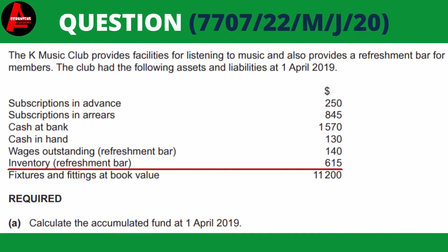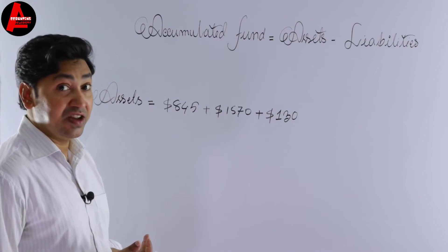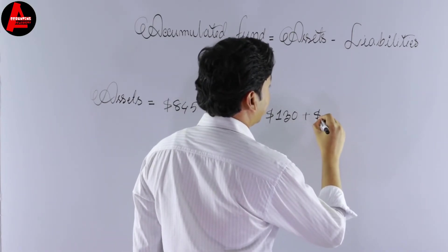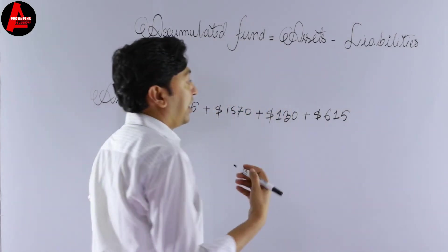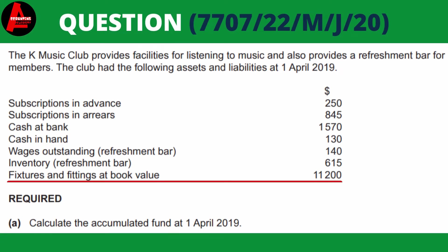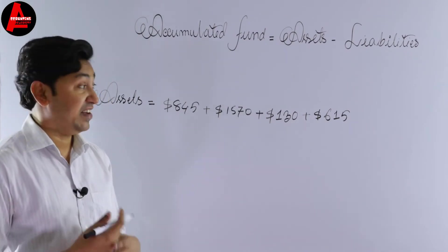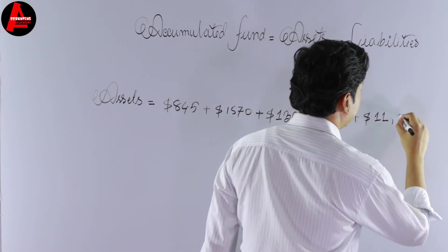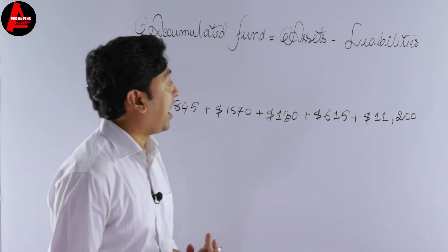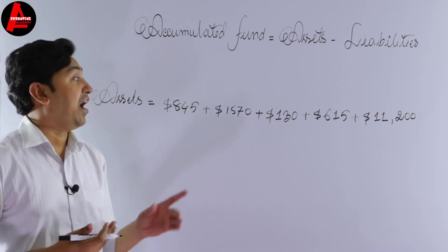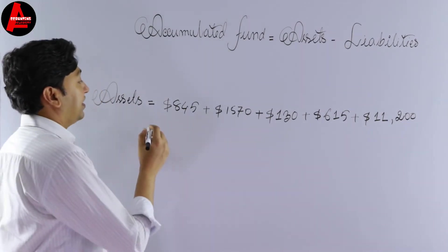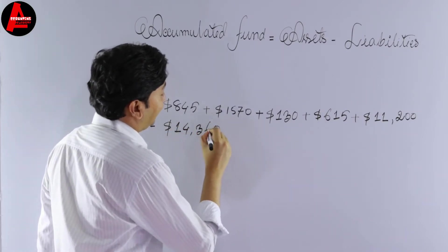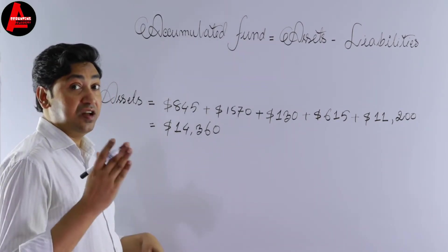Then we have inventory: $615 — yes, inventory is an asset, so we add $615. The last item is fixtures and fittings at book value: $11,200 — it is also an asset, so we write $11,200. Now if we add all these asset values together, we get a total of $14,360. This is the total assets for this question.